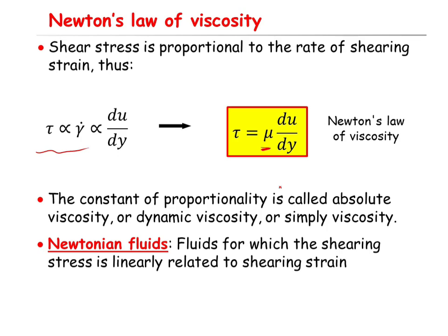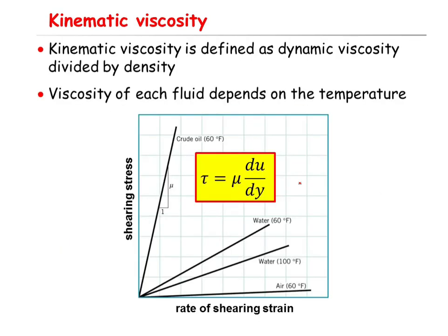For fluids for which the shearing stress is linearly proportional to the shearing strain, those fluids are called Newtonian fluids. When you look at textbooks and literature, sometimes people use the term kinematic viscosity, which is defined as the dynamic viscosity divided by the density.